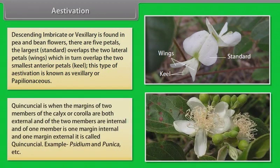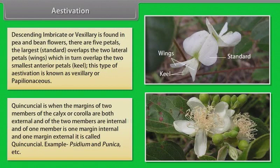Quincuncial is when the margins of two members of the calyx or corolla are both external, two members are internal, and one member has one margin internal and one margin external. Then it is called quincuncial. Example: Cedrus and Punica.